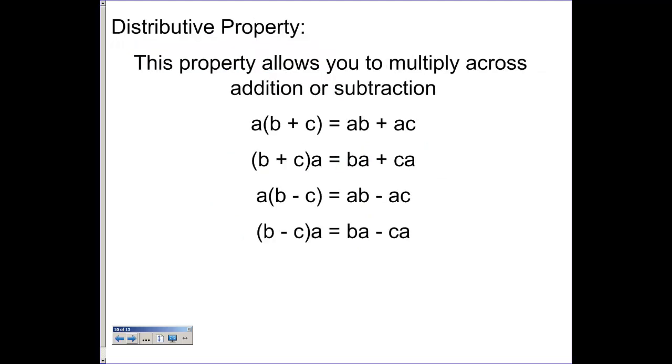The distributive property, this allows you to multiply across addition or subtraction. I know the book only shows addition, but it's actually addition or subtraction. So we can do the first one as a times b and a times c, and what we get out of it is a times b, plus a times c.